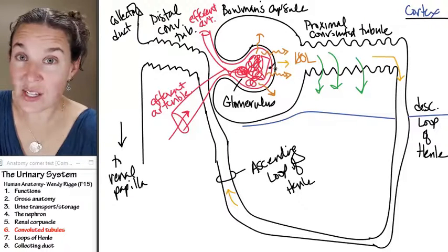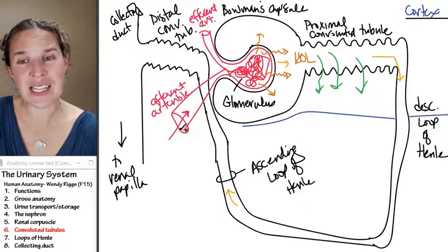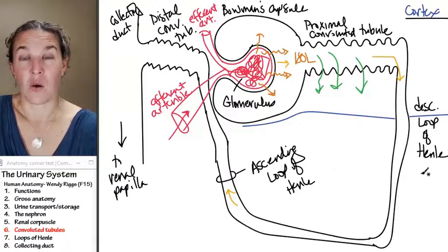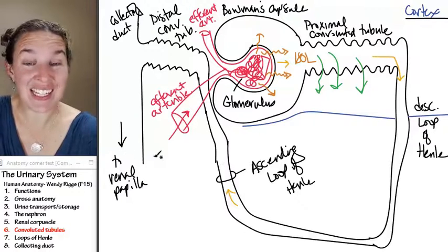Once you're not seeing glomeruli anymore, you know you're in the medulla. And then who are we going to see if we're in the medulla? We're going to see loops of Henle and collecting ducts.